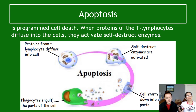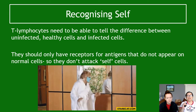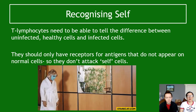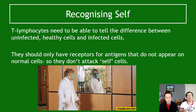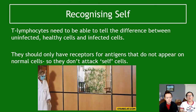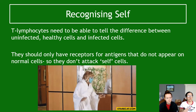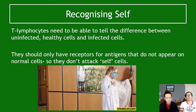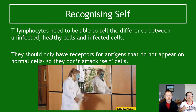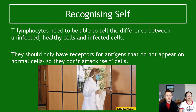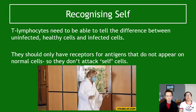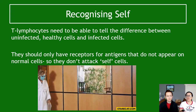T lymphocytes must be able to tell the difference between uninfected healthy cells and infected cells — if they can't, they'll start attacking normal body cells. T cell receptors should only recognize antigens that don't appear on normal cells. This is called self-recognition: T lymphocytes need to be able to say 'that's me' versus 'that's not me — I'm going to kill it.' Sometimes this can go wrong, where they don't recognize something as self.